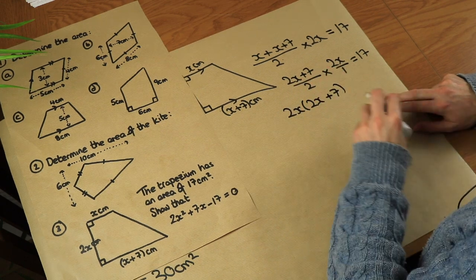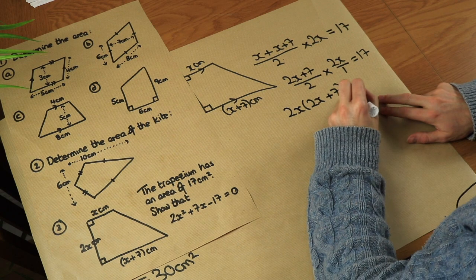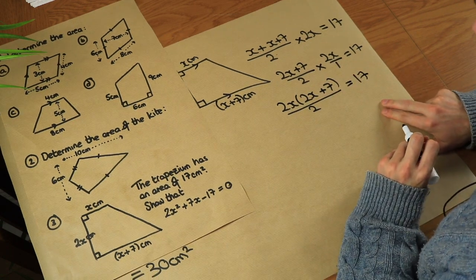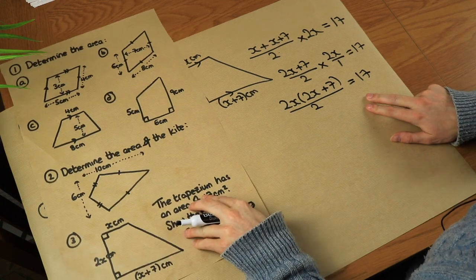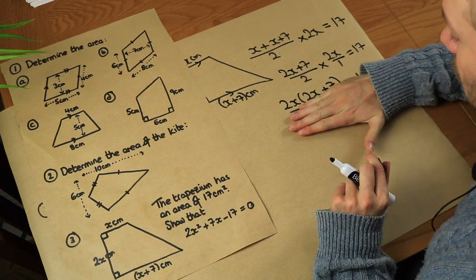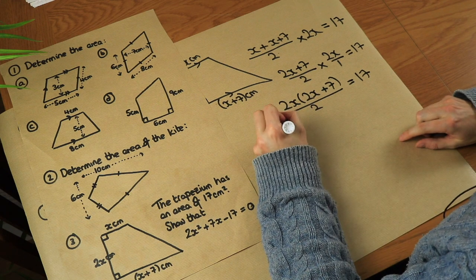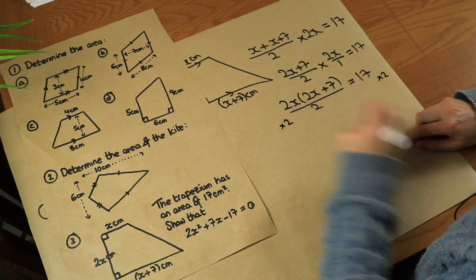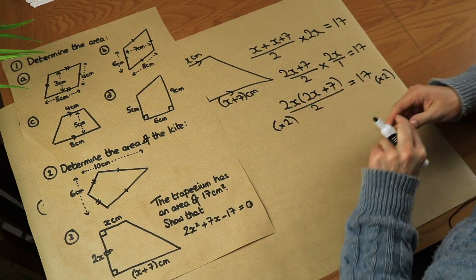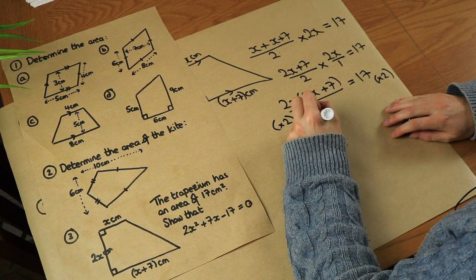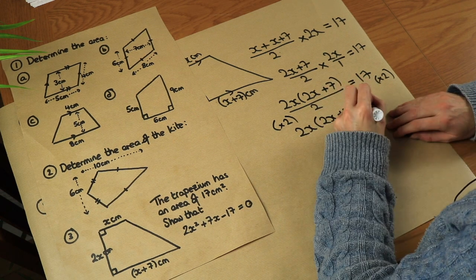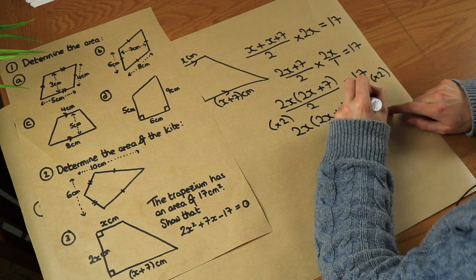Now I don't like fractions in my equation, so I'll multiply both sides by 2 to get rid of that denominator. Multiplying by 2 on the left-hand side gets rid of the over 2, leaving just 2x(2x + 7). And multiplying the right-hand side by 2 gives 34.